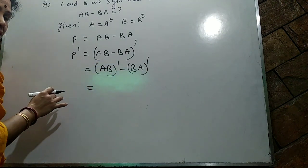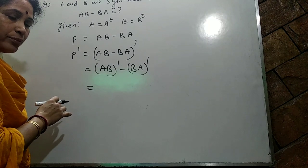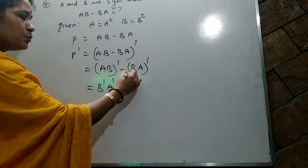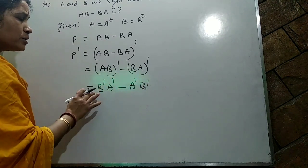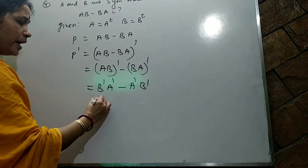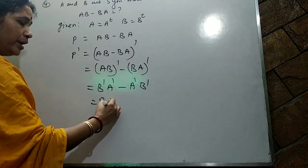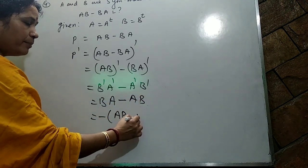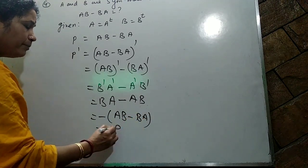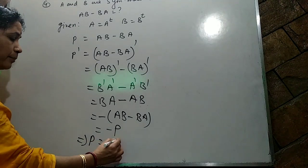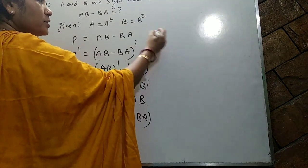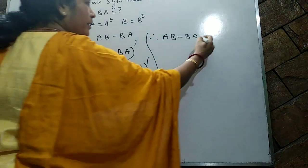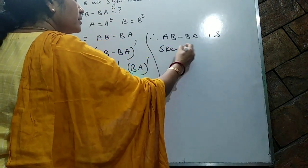Taking the transpose: (AB minus BA) transpose equals (AB) transpose minus (BA) transpose. Now (AB) transpose equals B transpose A transpose, and (BA) transpose equals A transpose B transpose. Substituting the given conditions — B transpose equals B, A transpose equals A — we get minus(AB minus BA). This implies the transpose equals minus the matrix, so AB minus BA is a skew-symmetric matrix.